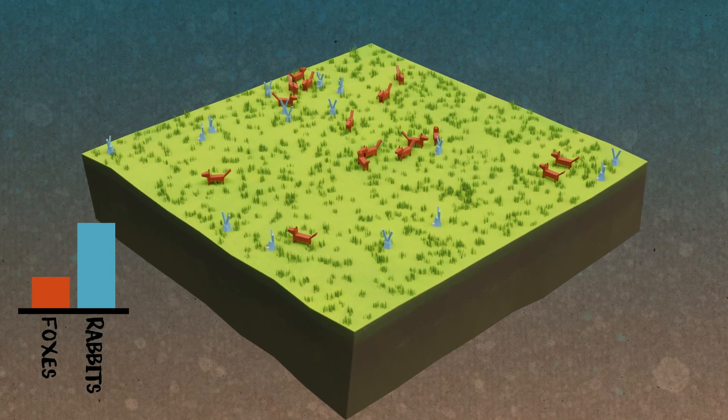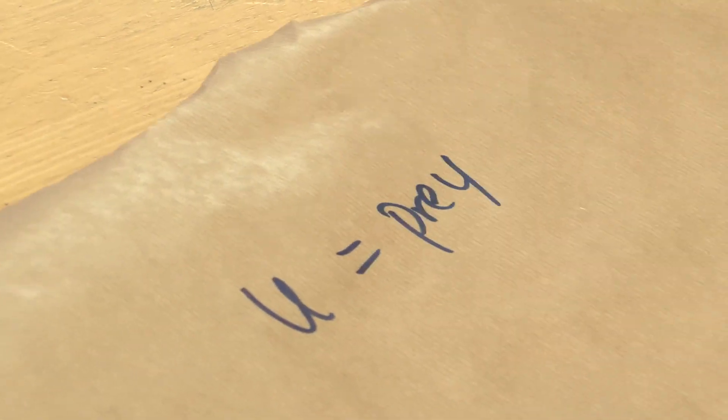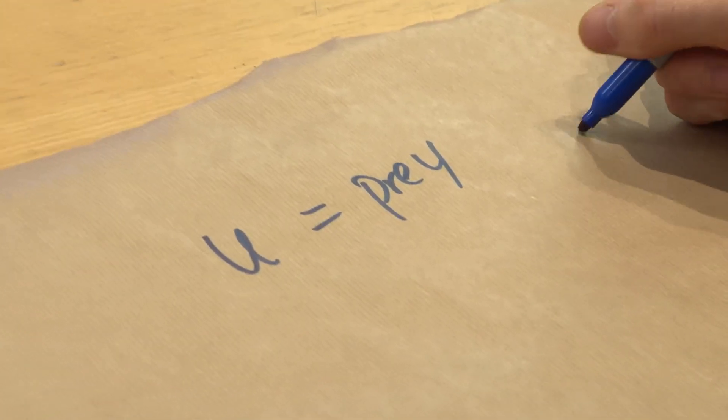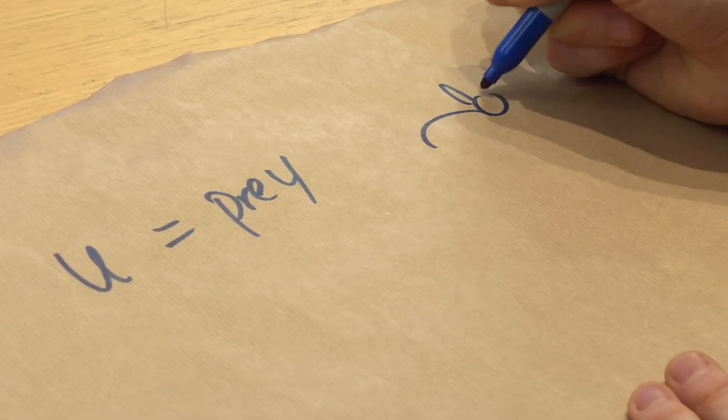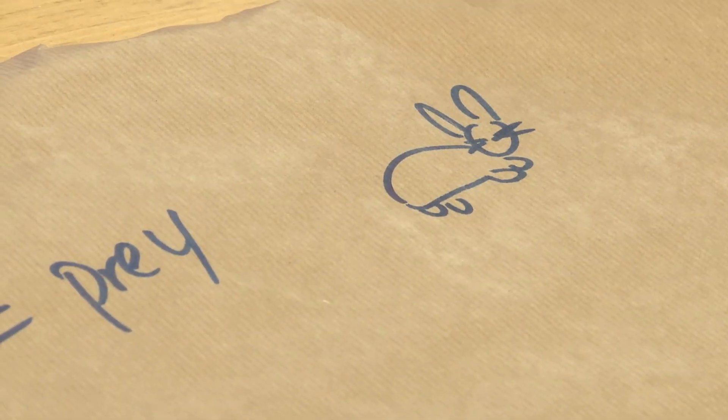You, U, are going to represent our prey. Why U? We tend to use U and V a lot in math. We can't use P because it's prey and predator. So U is going to be the rabbit, the prey. Here we go, attempt to draw a rabbit. Some ears, a leg. Do they have whiskers? Alright, there's a rabbit. I think that's a pretty good rabbit.